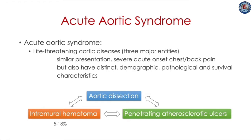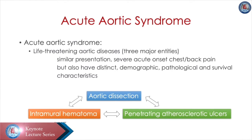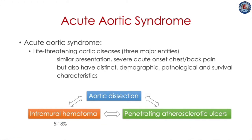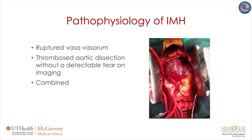Intramural hematoma is part of acute aortic syndromes — a term used to describe a constellation of life-threatening aortic diseases with similar presentations such as severe acute chest and back pain, but with distinct demographic, clinical, and survival characteristics. Many classify acute aortic syndrome into three major entities: number one is aortic dissection, number two is intramural hematoma, and number three is penetrating aortic ulcer. Many reports have documented that intramural hematoma incidence is between five to eighteen percent.